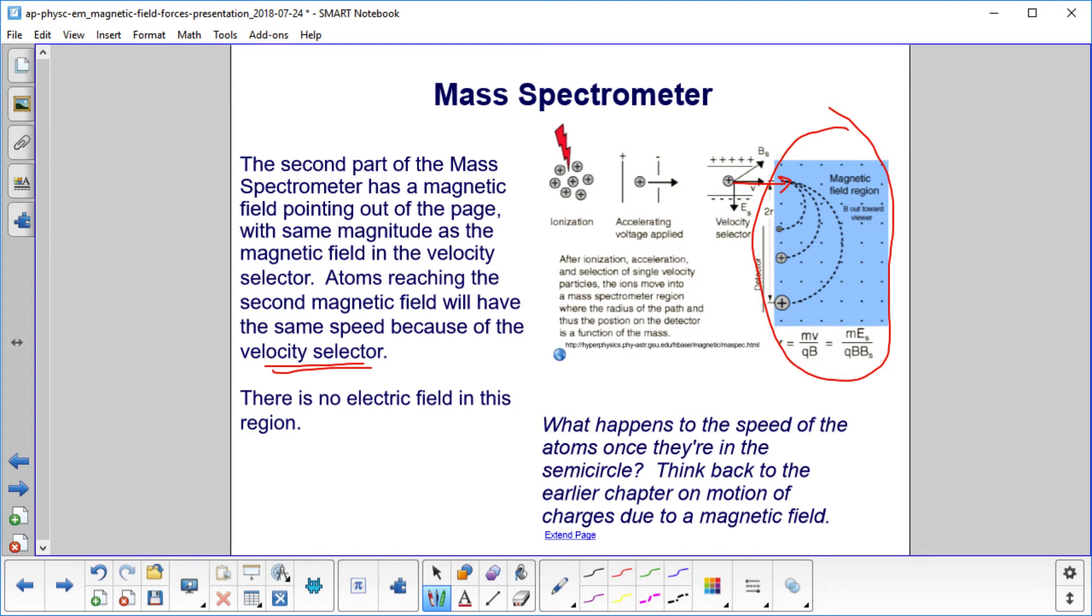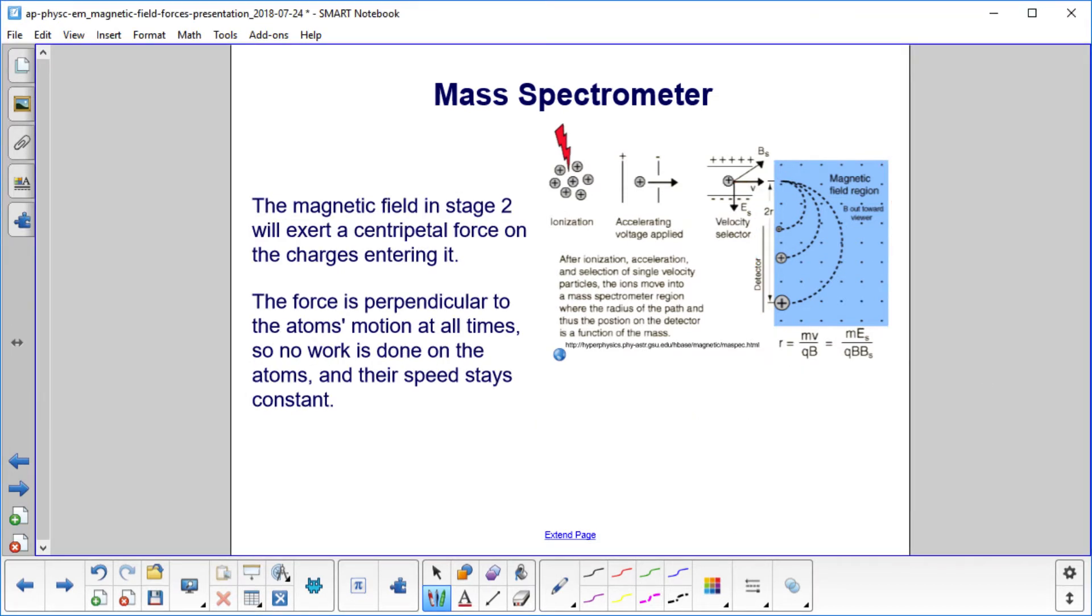What happens to the speed of the atoms or particles once they're in the semicircle? Think back to the earlier chapter on motion of charges due to a magnetic field. The magnetic field in stage two will exert a centripetal force on the charges entering it. The force is perpendicular to the atoms' motion at all times, so no work is done on the atoms and their speed stays constant.